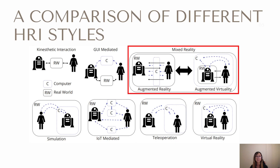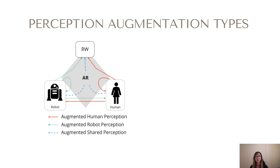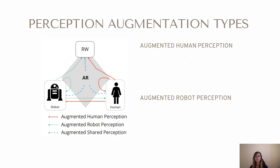The goal of augmented reality as a human-robot interface can be to provide additional information to the human, the robot, or both. The transfer of additional information can also be defined as the augmentation of perception. We propose the classification of perception augmentation types as the first dimension of our taxonomy. The purpose of augmented reality can be divided into two categories: one, to augment human perception, or two, to augment the robot's perception. Note that augmentation of perception of both members may occur simultaneously.